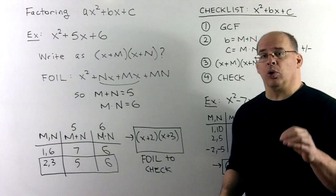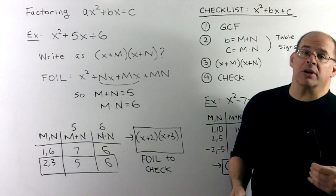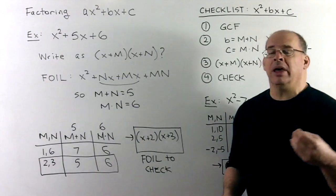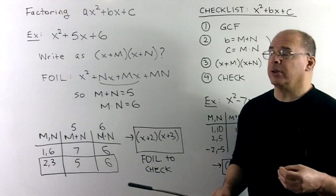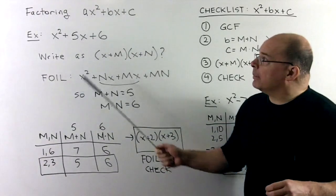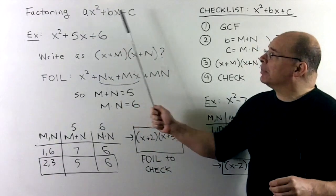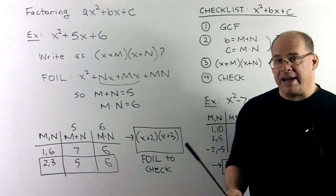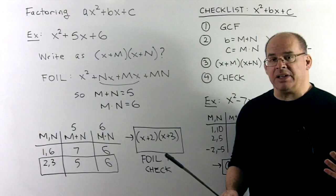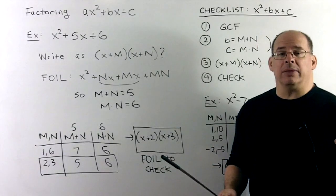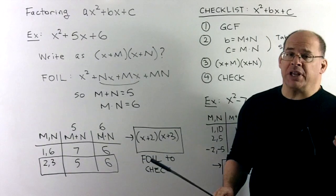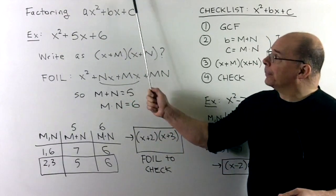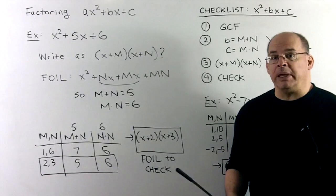With greatest common factor and grouping, we've opened the door to factoring. We're trying to undo multiplication of one-by-one and two-by-two. Our ultimate goal is to factor ax squared plus bx plus c. Right now we'll work on basic techniques, and ultimately we'll get the quadratic formula, which can factor any quadratic in this form. But let's start at the beginning.